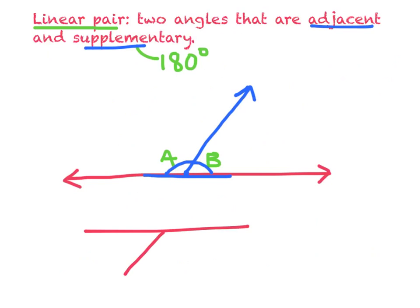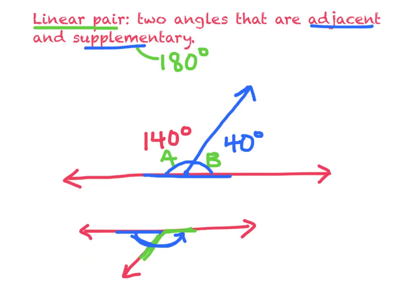I could also draw two angles like this — one in blue and one in green. They're connected, they're adjacent, and together their measures add up to 180, making a straight line. So those are called linear pairs. If this angle measured 140 degrees, you could automatically figure out that the other angle would have to be 40, because 140 and 40 equals 180. So if you know one of them, you can find the other.